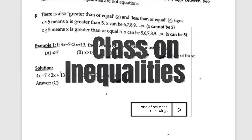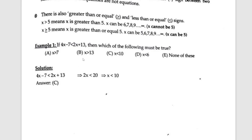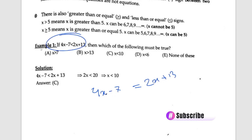If you have an inequality, you will treat it as an inequality. So let's say 4x minus 7, less than 2x plus 13. This is an inequality. What do you do?